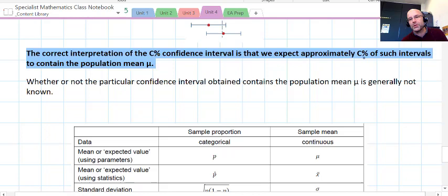So it brings us to the correct interpretation of the C% confidence interval. We expect approximately C%—you replace C with 90, 95, 99—of such intervals to contain the population mean. Whether or not the particular confidence interval actually does contain mu is generally not known in the real world. So it is a confidence thing. It's not a total guarantee.